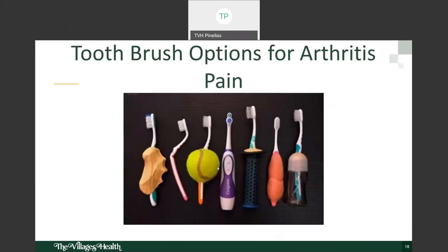Probably the easiest modification is the use of a tennis ball — make an incision at either end and slide your toothbrush through, creating a wider surface that's easier to grab. An electric toothbrush is another great option: you position the bristles over your teeth and they do their work without needing to move your hands back and forth. Other options include a bicycle grip with a toothbrush inserted, or you can create your own grip from clay. There are also various types of floss and floss instruments available to help you access your teeth and remove bacteria.